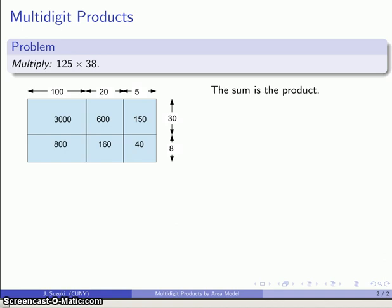So how you add them together, it depends on how you want to add them together, but we might add them this way. I might go to this first set of rectangles here, 3,000 plus 800, 600 plus 160, 150 plus 40 gives me 190, and I'm going to add these three numbers together. And skipping over the details, I get 4,750 as my final sum and product.